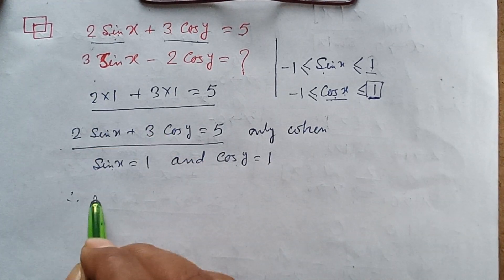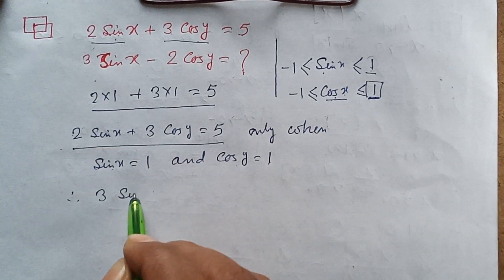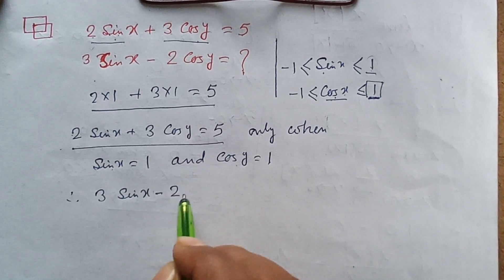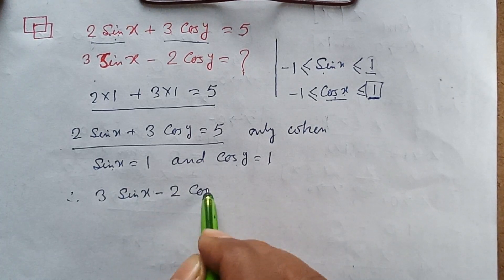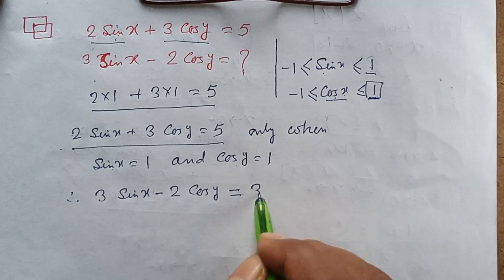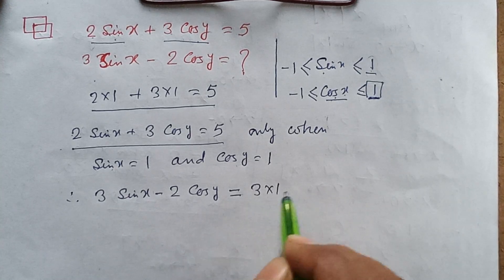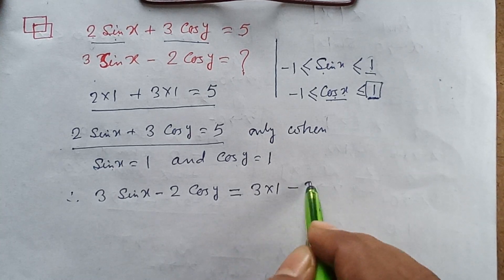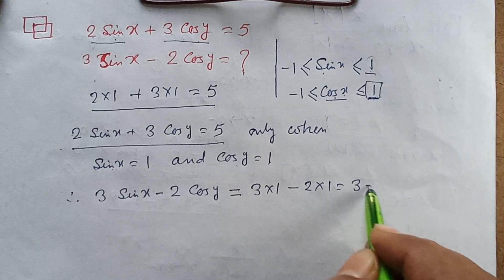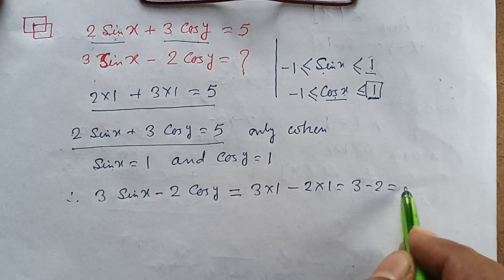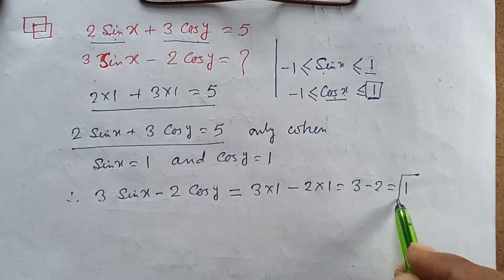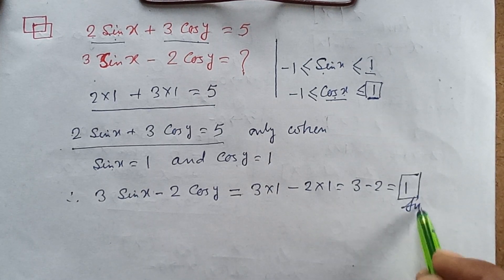Hence, 3 sin x minus 2 cos y equals 3 into 1 minus 2 into 1, this is equal to 3 minus 2, this is equal to 1. This is the answer.